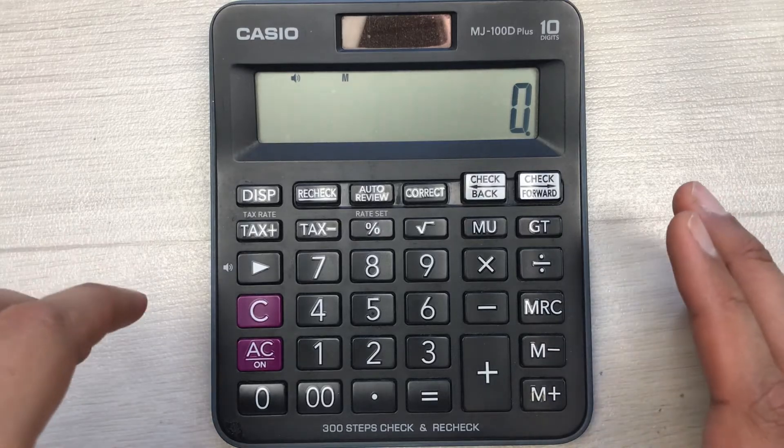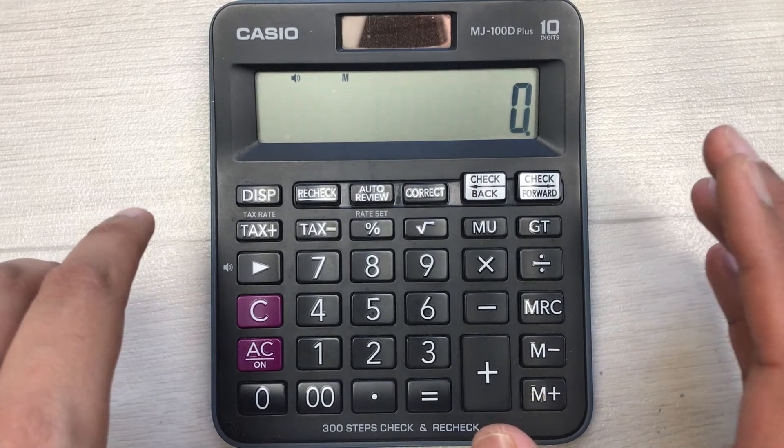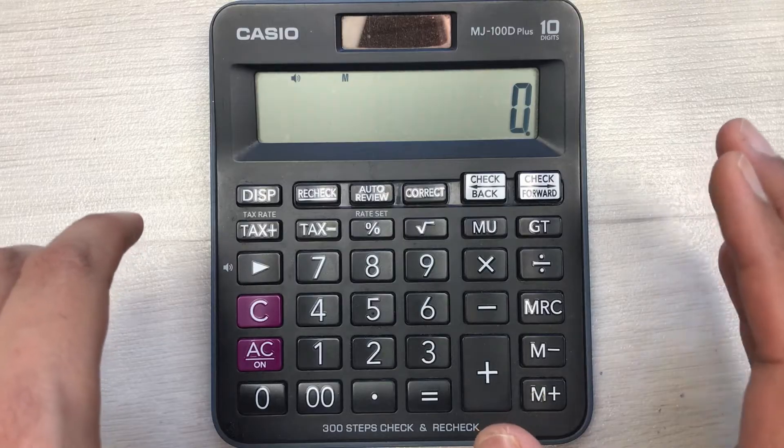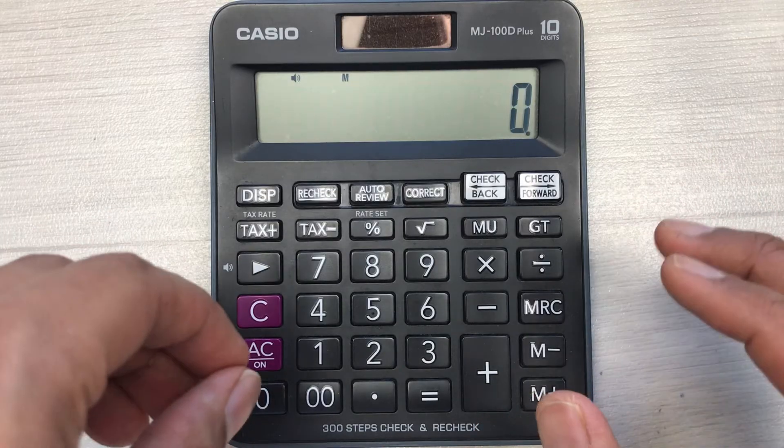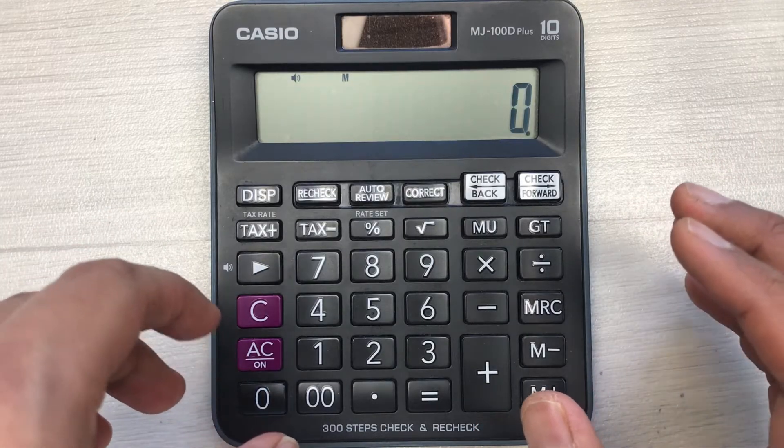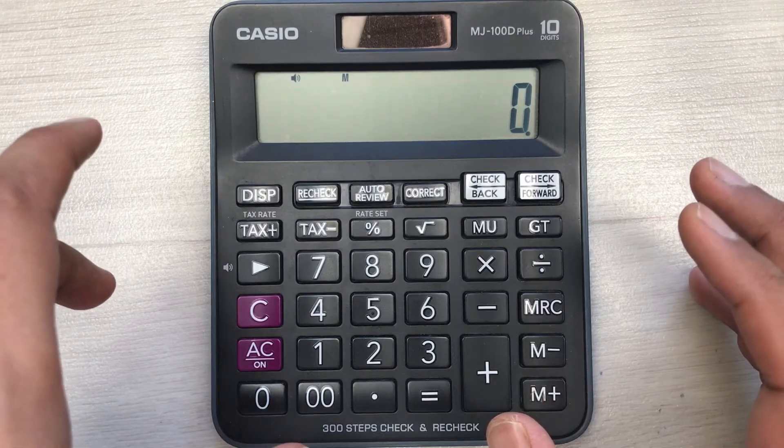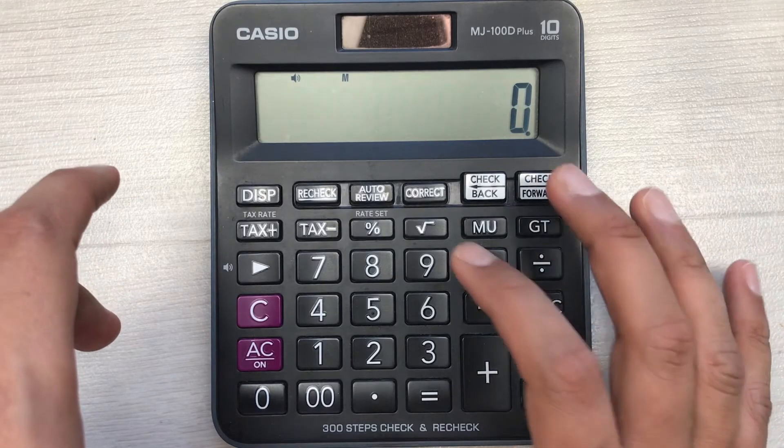Hello guys, I hope you are doing really well. In today's video I am going to show you how to calculate 25% discount on your calculator. So for example, you have an item and the price of that item is 9680.